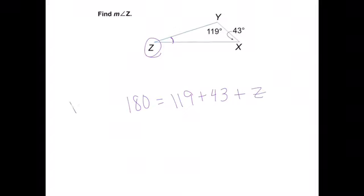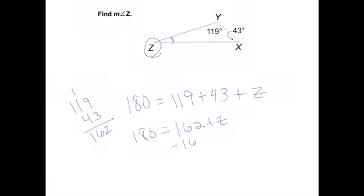In this case I can combine them together, so 119 plus 43, 9 and 3 is 12, carry my 1, 4, 5, 6, so 162. So 180 equals 162 plus Z. To solve this, remember I'm going to subtract 162 from both sides, 10, 8, 7, I end up with 18 degrees equals my Z. So what I'm seeing is right in here, this little piece there is 18 degrees.